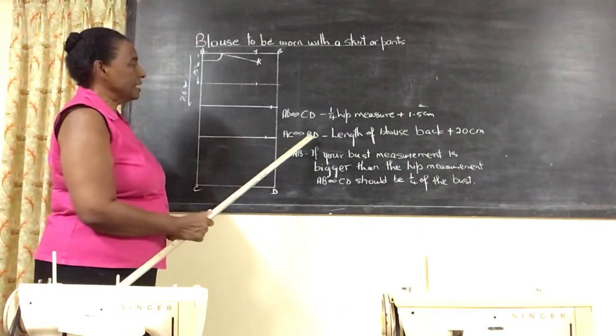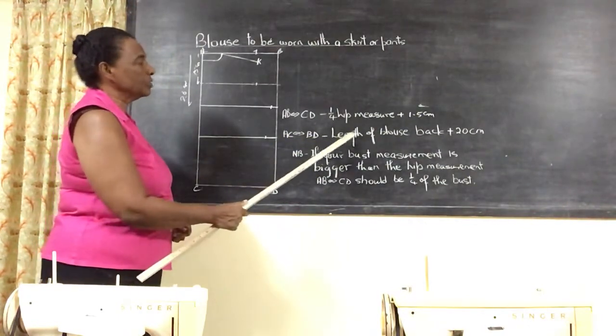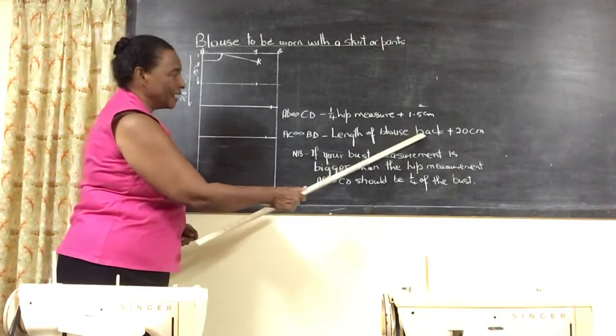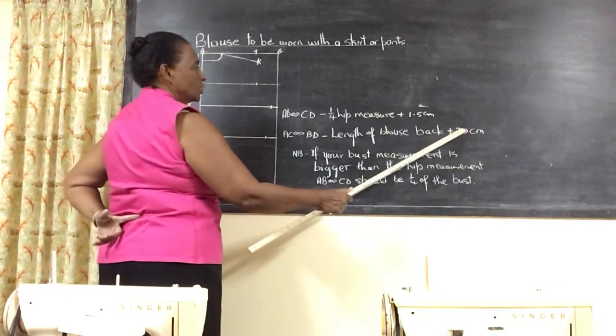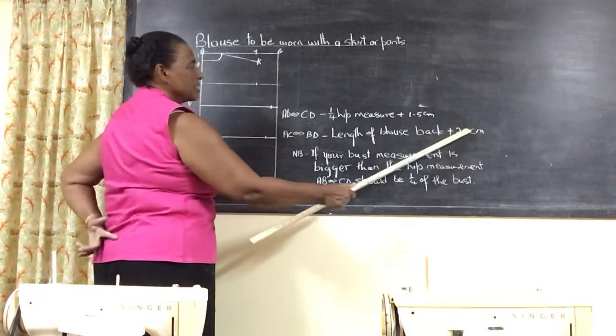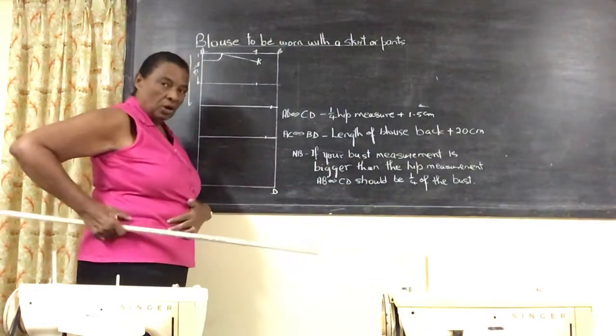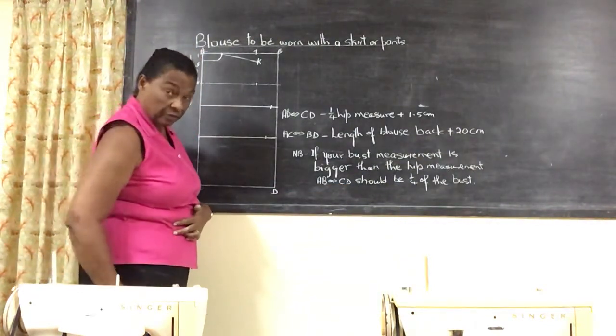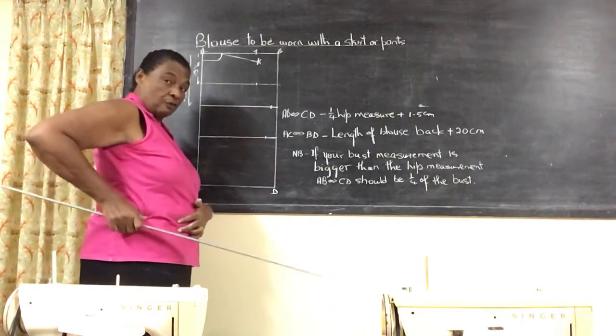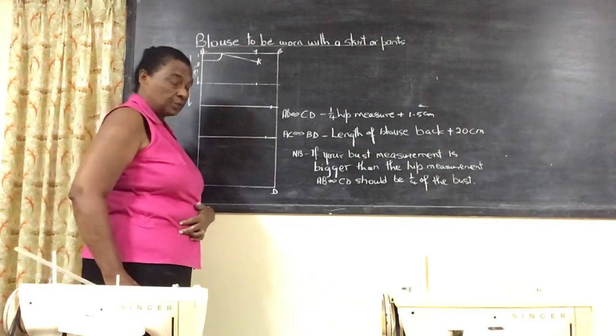Your AC and BD will be the length of the blouse back. That's to your waist, then you add 20 centimeters. This can vary depending on how much length you need. You will measure from your waist down to the desired blouse length.